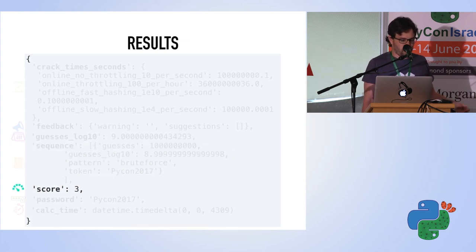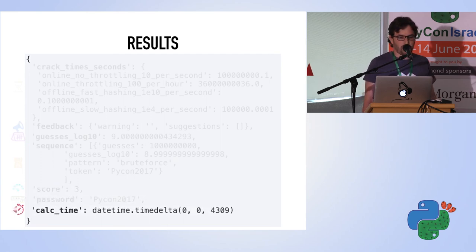The score is just a score from zero to four, the password you sent, and the calc time—how long zxcvbn took to run for this password. In this case, it took four milliseconds.